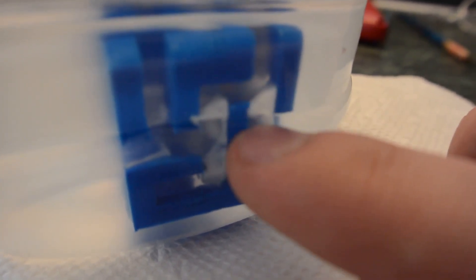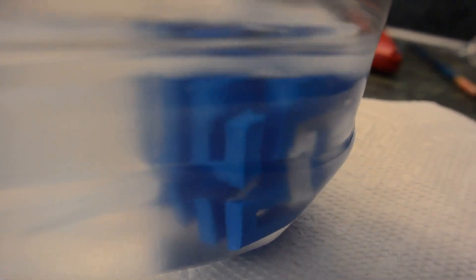So an hour later, we can see that the limonene is pretty cloudy. So it's starting to dissolve something. And the HIPS filament is looking a little gooey. It's kind of hard to see through the camera. But you can tell that it is starting to dissolve. It looks a little more rounded. You can't see all of the layers. So it's going to take some time to actually dissolve this away. So I'm going to leave this overnight. And we'll come back in the morning and see if it's all dissolved.